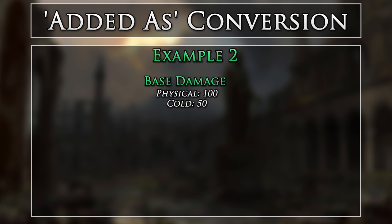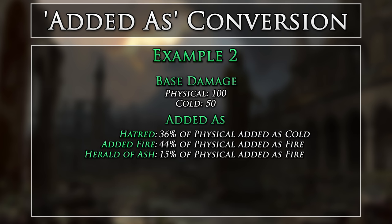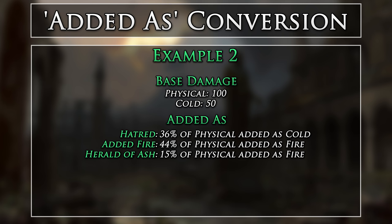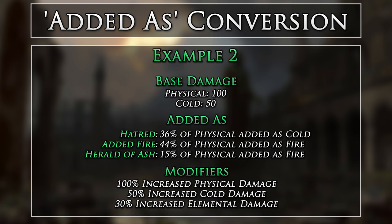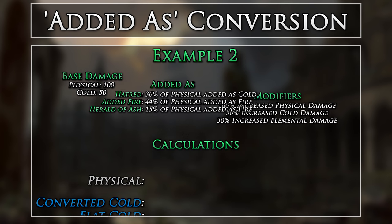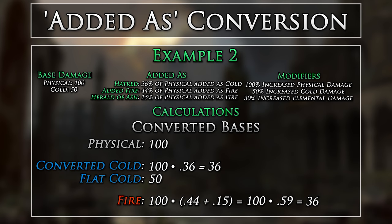For our bases, we will now have 100 physical and 50 cold. For our added as conversions, we will have Hatred, added fire, and Herald of Ash. For our modifiers, we will have 100% increased physical damage, 50% increased cold damage, and 30% increased elemental damage. Now these modifiers will only be applied once, after the conversions are complete. So let's first get our new base damages after conversions.